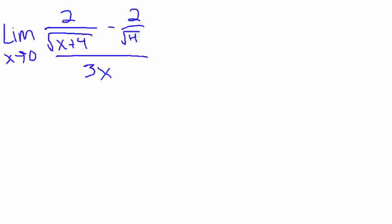If this 3 was not here, then it would fit our definition of derivative perfectly. Unfortunately, that 3 is there. So what I'm going to say is without the 3 in the bottom, it would be f prime of x at a point.